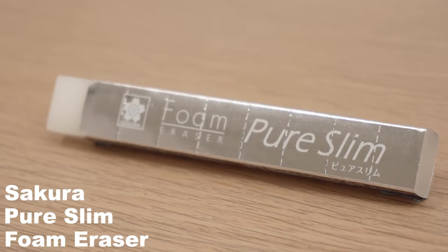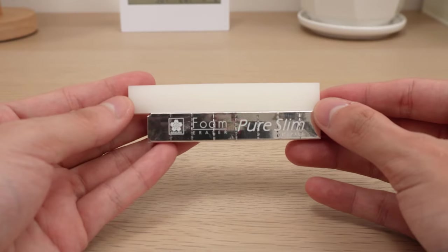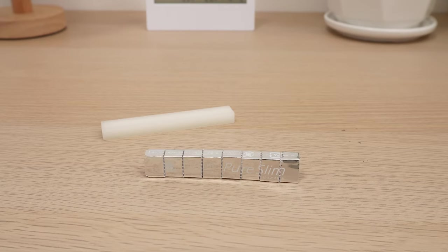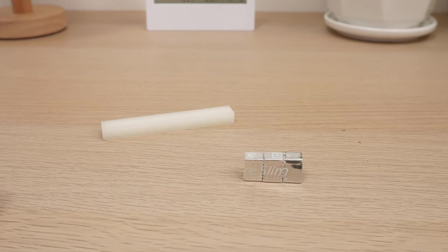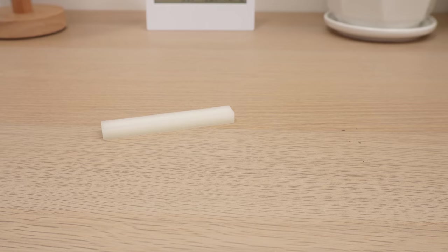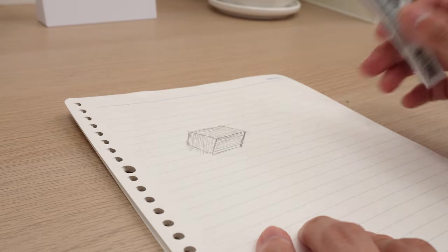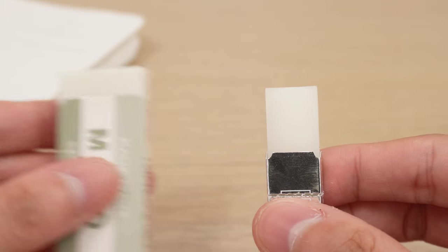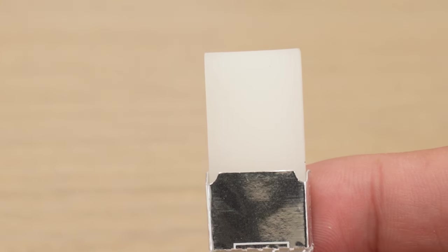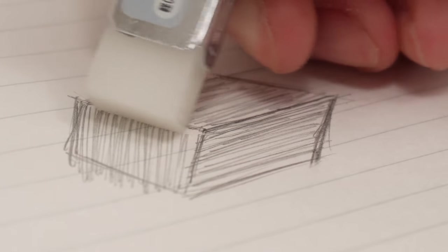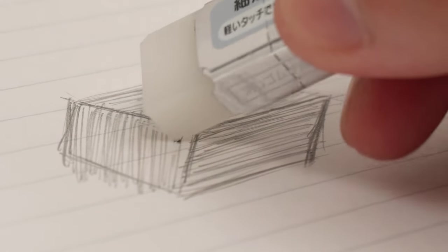Now, the Sakura Pure Slim Foam Eraser with its perforated protective paper sleeve. This smart design allows you to adjust the sleeve as the eraser shrinks with use. It erases with minimal pressure, leaving no smudges or paper tears. Its special shape makes it perfect for precise erasing, even in tight corners. A practical and efficient tool for all your erasing needs.